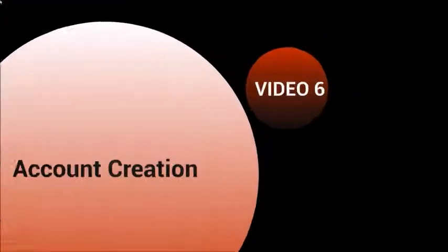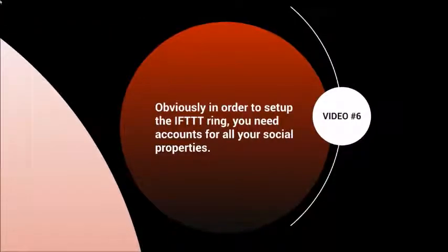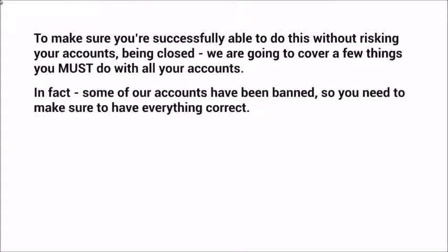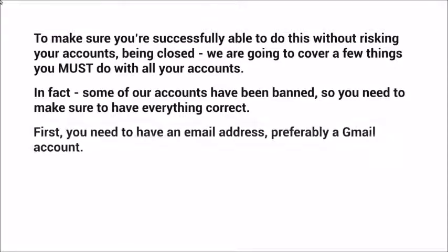This is video six — account creation. To set up the IFTTT ring, you need accounts for all your branded social properties, meaning you need a username and password for Facebook, Twitter, and all other social media platforms. If you already have some, great. For the ones you don't have, you'll need to create them. There are a few important things to focus on to avoid your accounts being closed — some of our accounts have been banned by mistake because it has to be done a certain way.